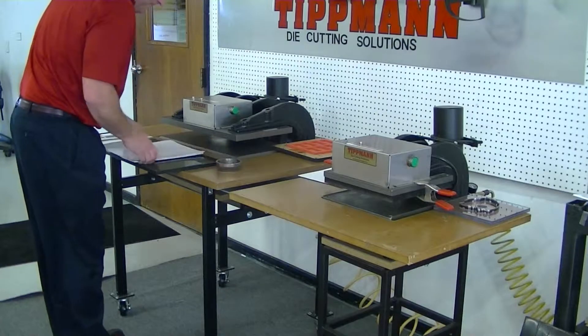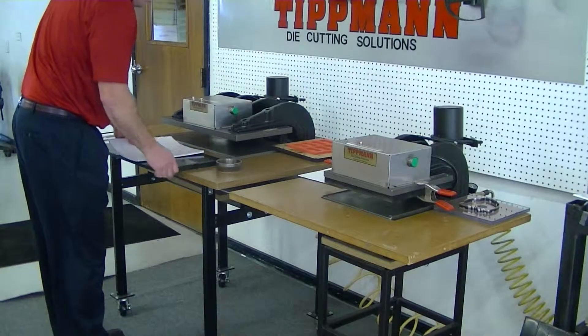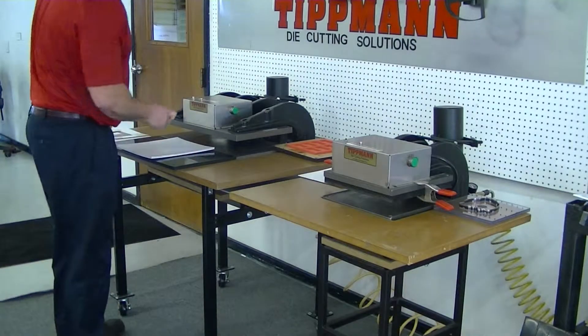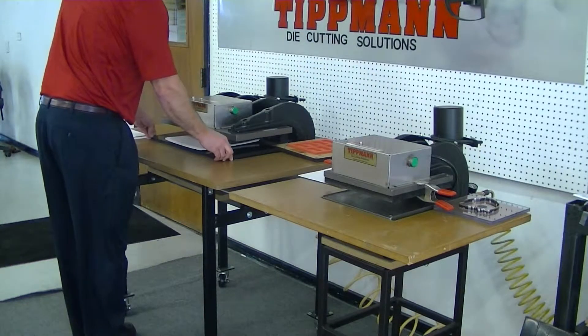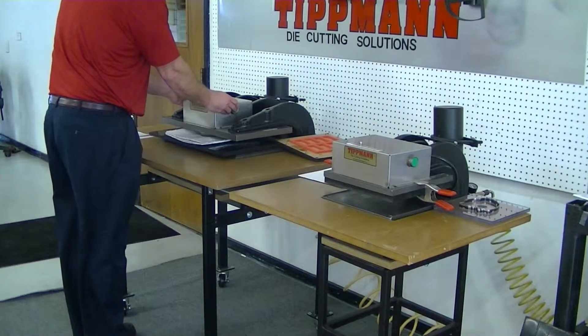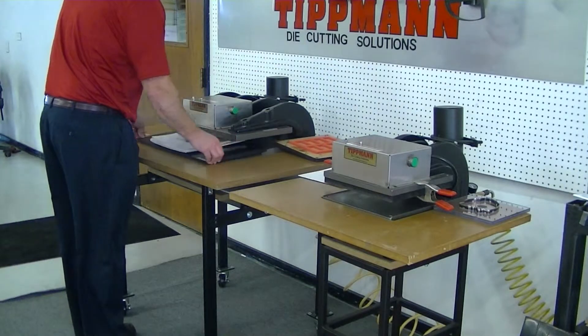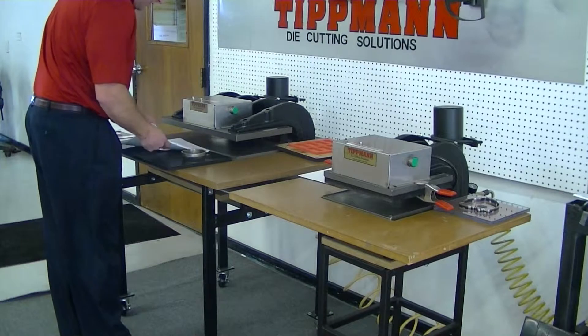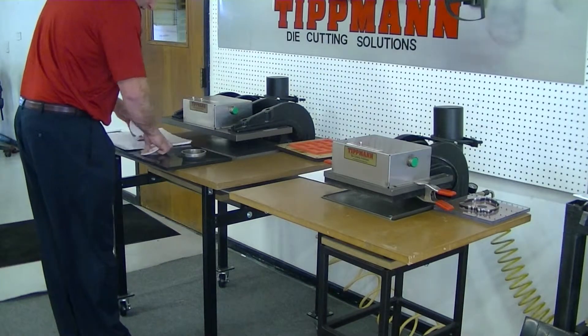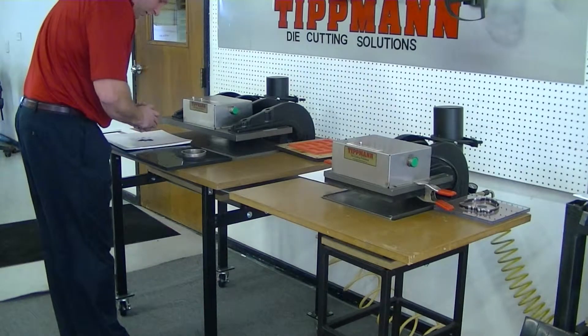With this type of die, with the forged die, you would simply align by eye since there's no way to necessarily register it. We'll slide it in, push it out, and then right there, I got a nice, clean cut.